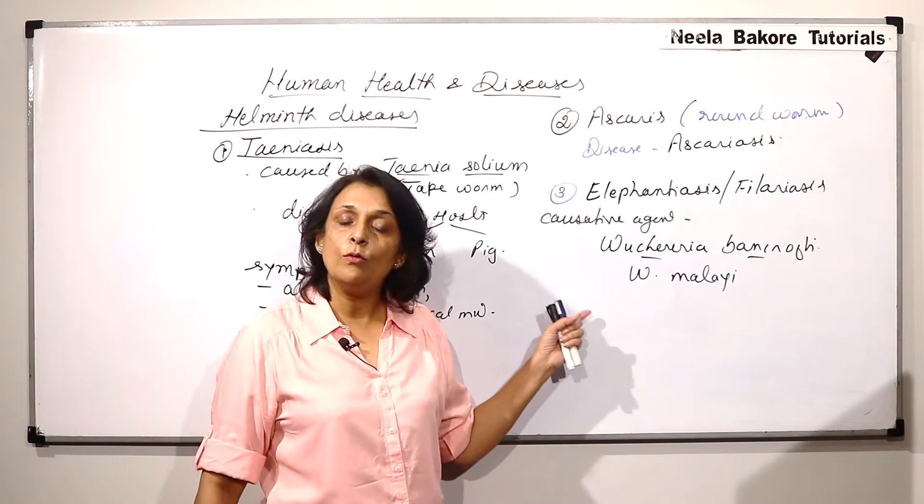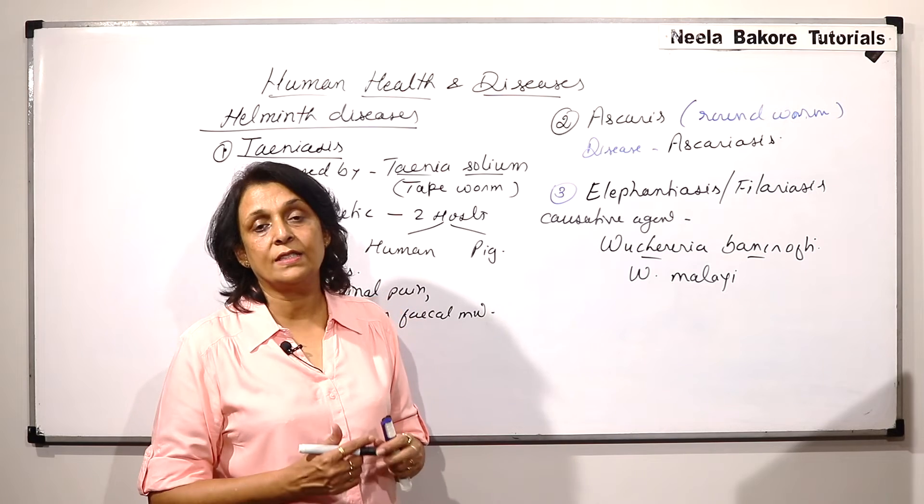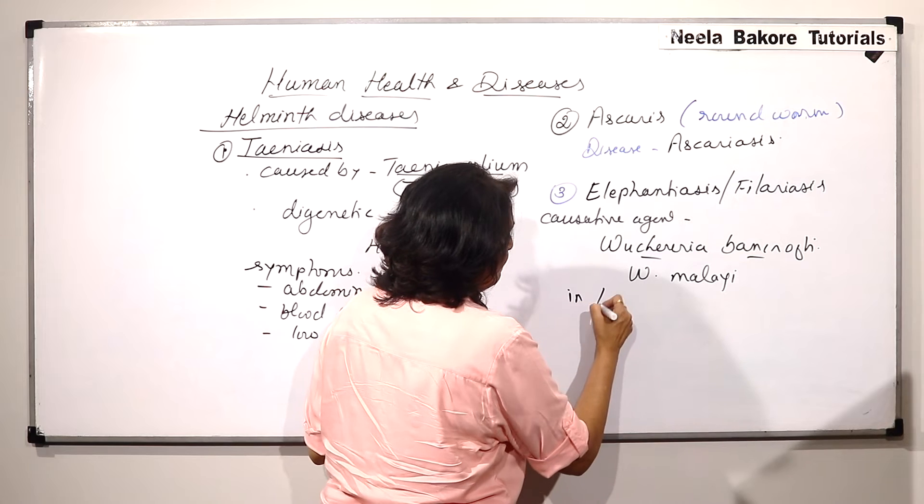Now, they can be found anywhere in our body but the most common area where the Filaria worm is found is in lymphatic vessel.